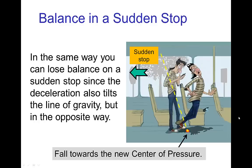A similar case happens if the bus is moving at a constant speed but then suddenly stops. This deceleration causes the line of gravity to tilt in the opposite direction. The new center of pressure is again outside of the character's base of support, and the character is thus out of balance due to this sudden stop and falls towards the center of pressure.